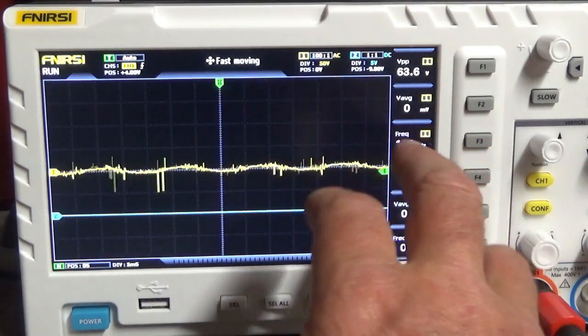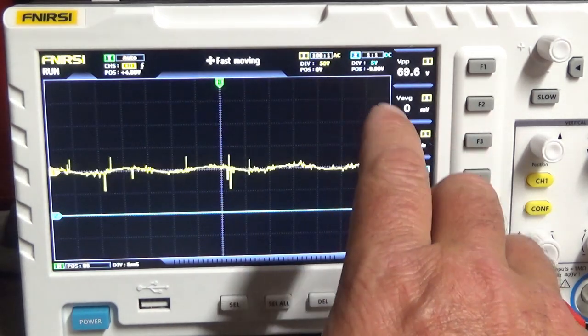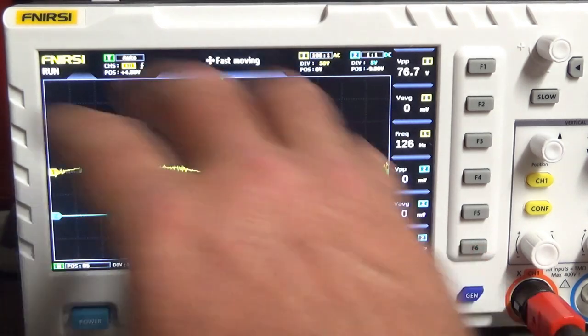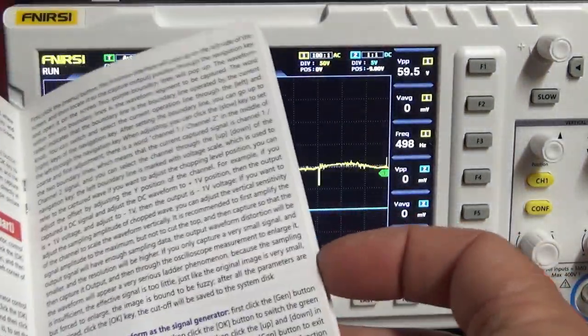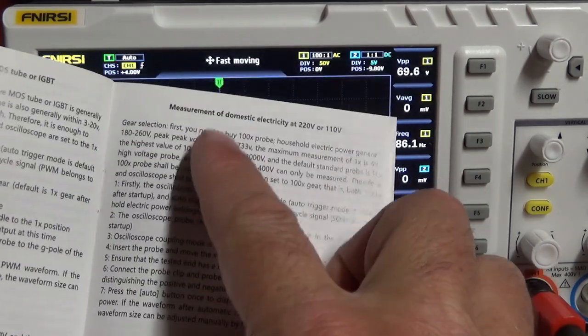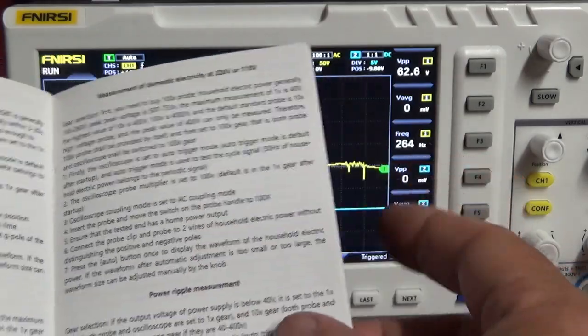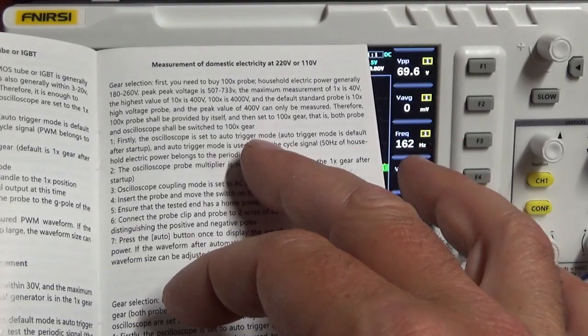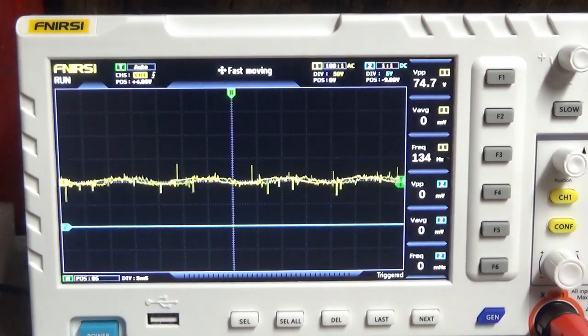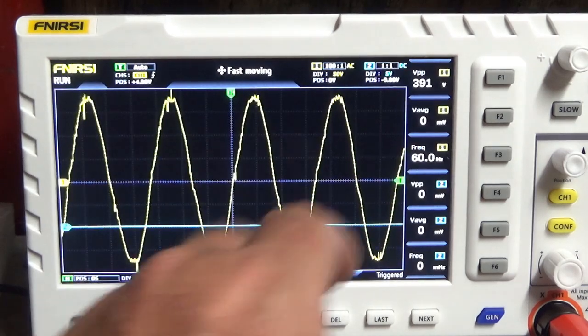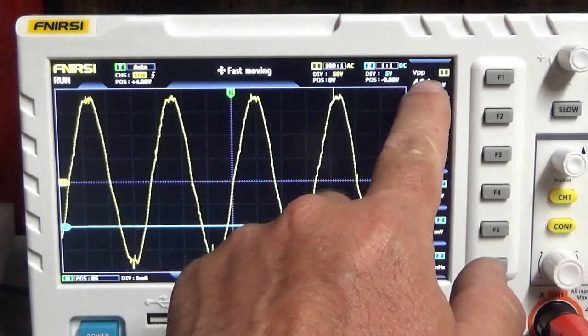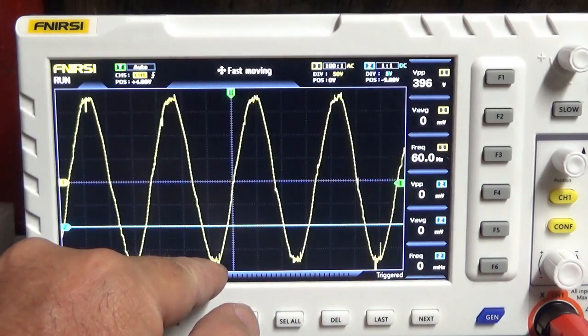Of course there's a little bit to learn, but the instruction manual on this is really good and really easy to understand. It even tells you instructions on how to read your power ripples, measurement of domestic electricity at 220 or 110 volts. It tells you what you need to do and how to do it. So I'm very pleased with the instructions. It's very very easy to understand. One thing I want to note again, forgive that ripple, that's from my open air miners. They're really nasty dirty electronics.